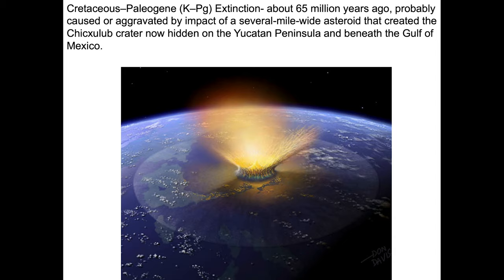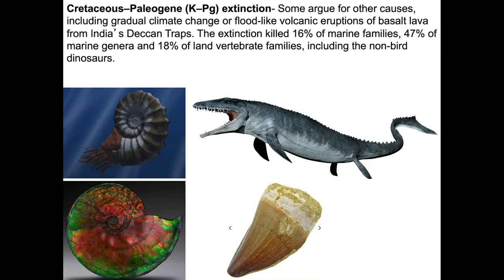Scientists have argued for well over 100 years as to what caused this extinction event. Some argued that climate change was the main proponent, or that the volcanic eruptions in India — the Deccan Traps — were responsible. Regardless, the extinction killed 16 percent of marine families, about 50 percent of marine genera, and about 20 percent of land vertebrate families, including the non-bird dinosaurs.